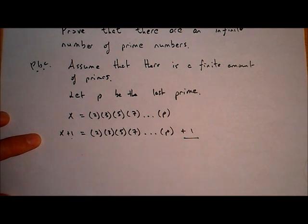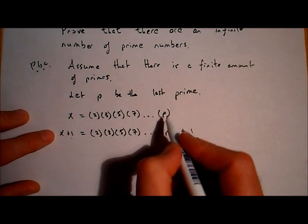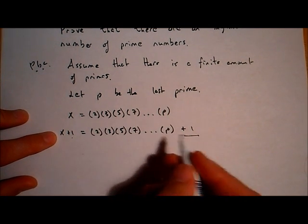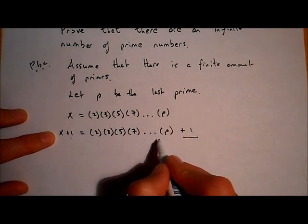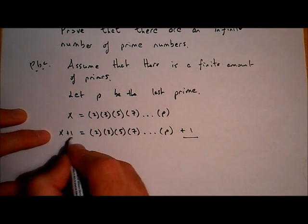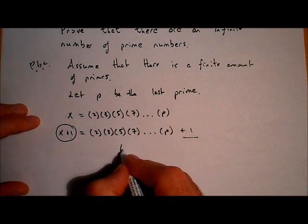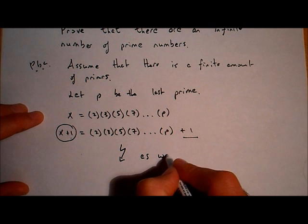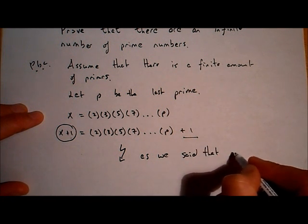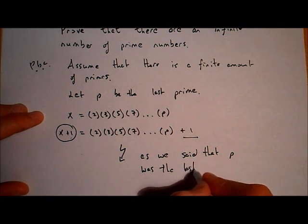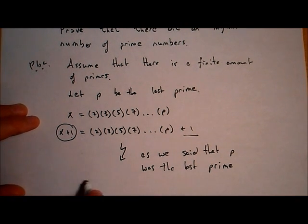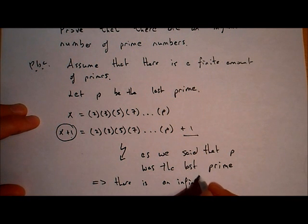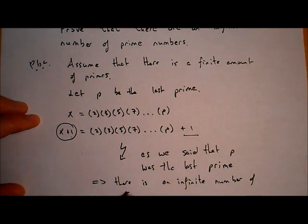We assumed there's a finite amount of primes, but we've made a contradiction: we've created a bigger prime. We said P was the last prime, but we made a new number — 2 by 3 by 5 by 7 all the way up to P, plus 1 — and X plus 1 is a new prime number. That's a contradiction, since P was supposed to be the last prime. Therefore, there is an infinite number of prime numbers.